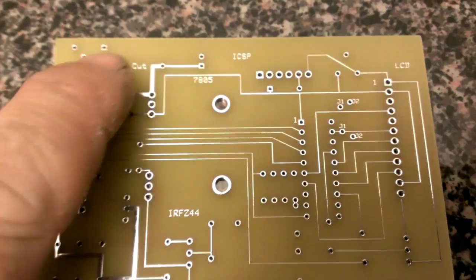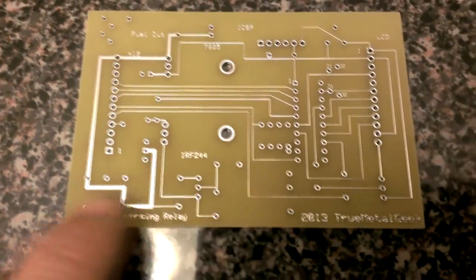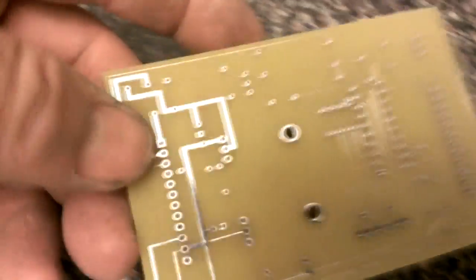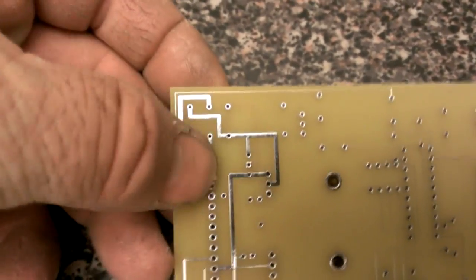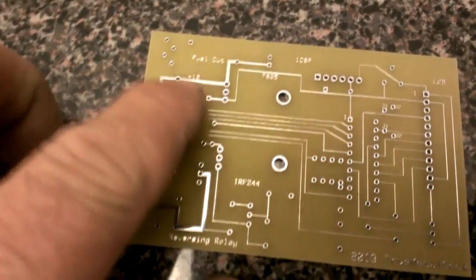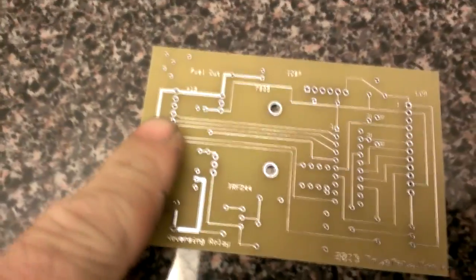So my fuel kill relay and my polarity reversing relay. The other traces on the back, that's where the traces are heavier. This is where the plug goes.